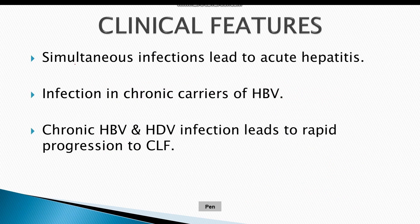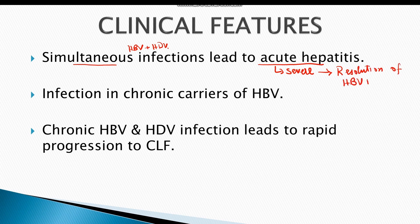Simultaneous infections of hepatitis B virus and hepatitis D virus lead to acute hepatitis. Acute hepatitis in this case is extremely severe, and recovery occurs with the resolution of hepatitis B virus infection. In rare cases, simultaneous infection might also progress to chronic hepatitis.